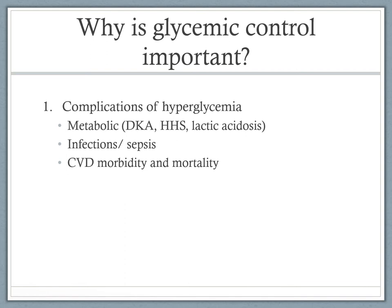We have to think about the complications of hyperglycemia — short-term, intermediate, and long-term. Short-term metabolic consequences include DKA or hyperosmolar hyperglycemic syndrome, particularly in patients with type 1 or type 2 diabetes respectively, so it's important to avoid hyperglycemia to prevent those emergencies. A patient who is consistently hyperglycemic is also more prone to infections, sepsis, and poor wound healing. Cardiovascular morbidity and mortality are also important considerations, both in the short and long term.